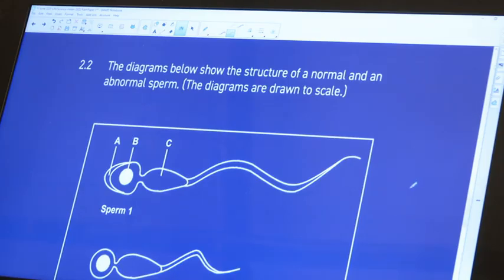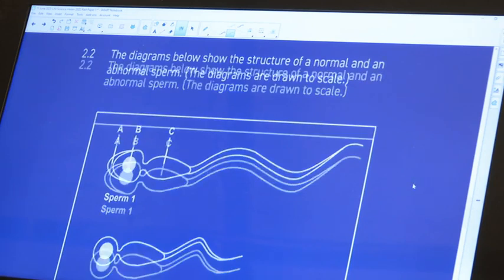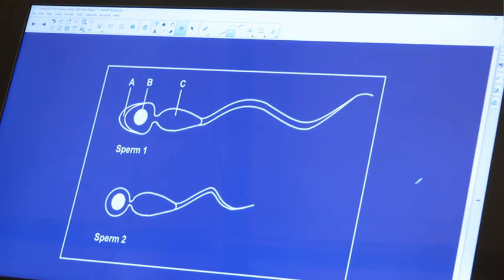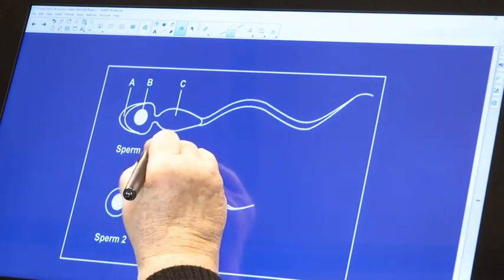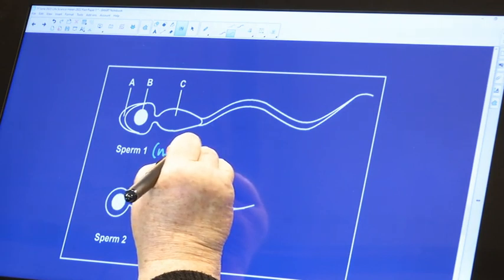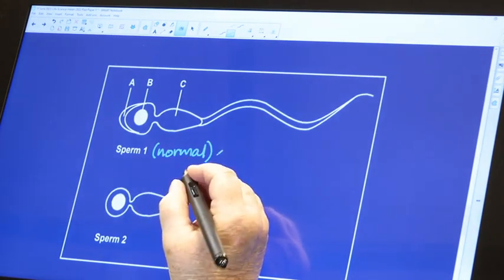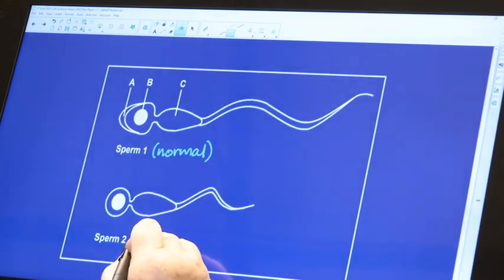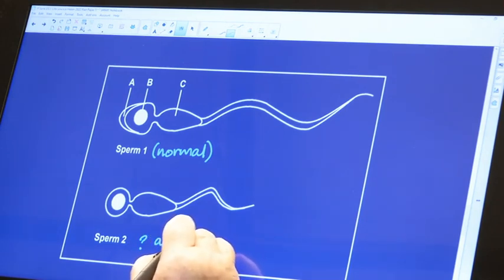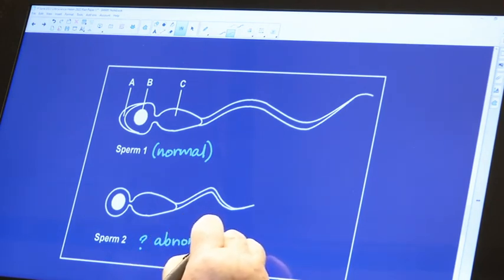The diagrams below show the structure of a normal and an abnormal sperm cell. And we're told that the diagrams are drawn to scale. And if you look at these two diagrams, you would most definitely recognize diagram one as your normal sperm cell, because that's what you had to draw. That's what you learned from the textbook or from your teacher's notes. Whereas sperm number two looks very strange. This must be the abnormal sperm cell.